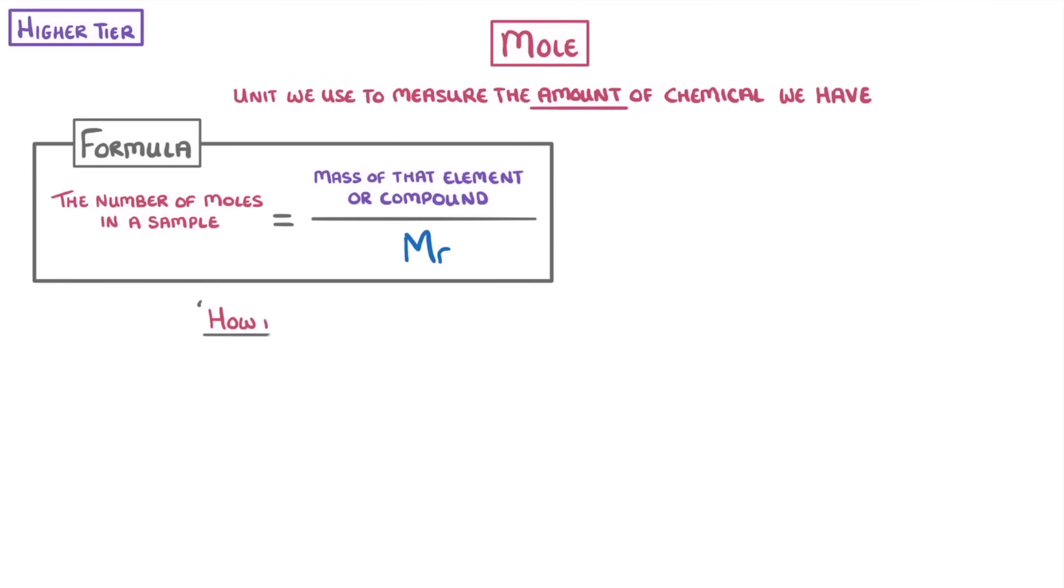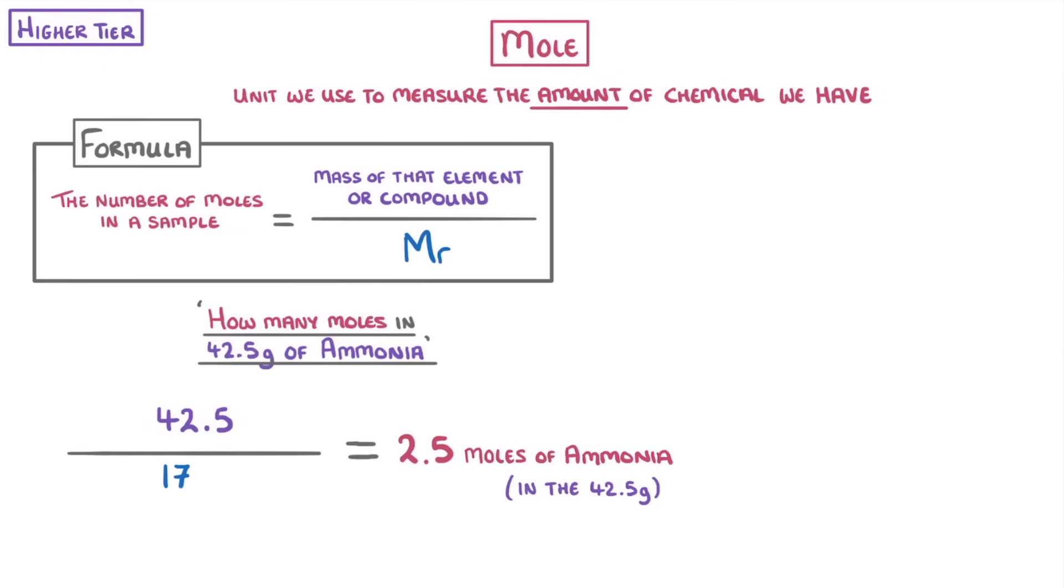So if we want to know how many moles there were in 42.5 grams of ammonia, we would do 42.5, which is the mass, divided by 14 plus 3 times 1, so 17, which is the MR of ammonia. And this would give us 2.5. So we know that there are 2.5 moles of ammonia in the 42.5 grams.